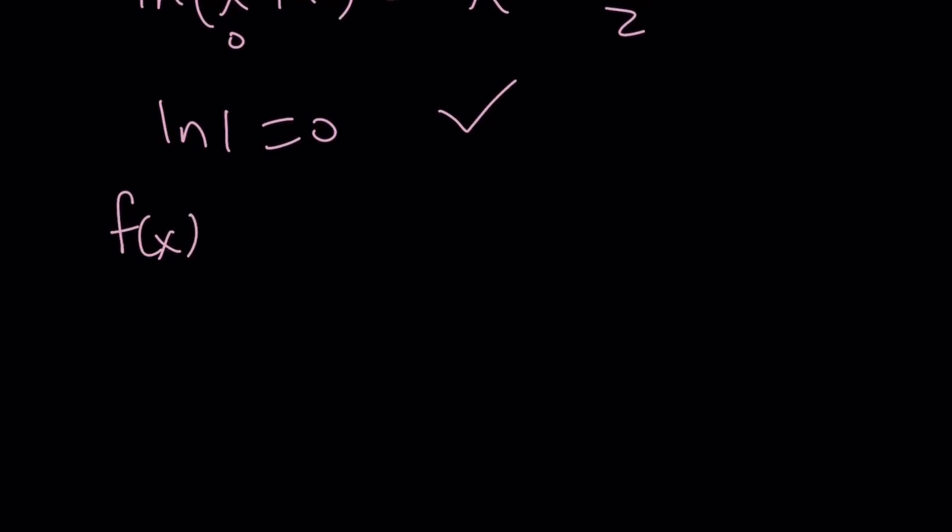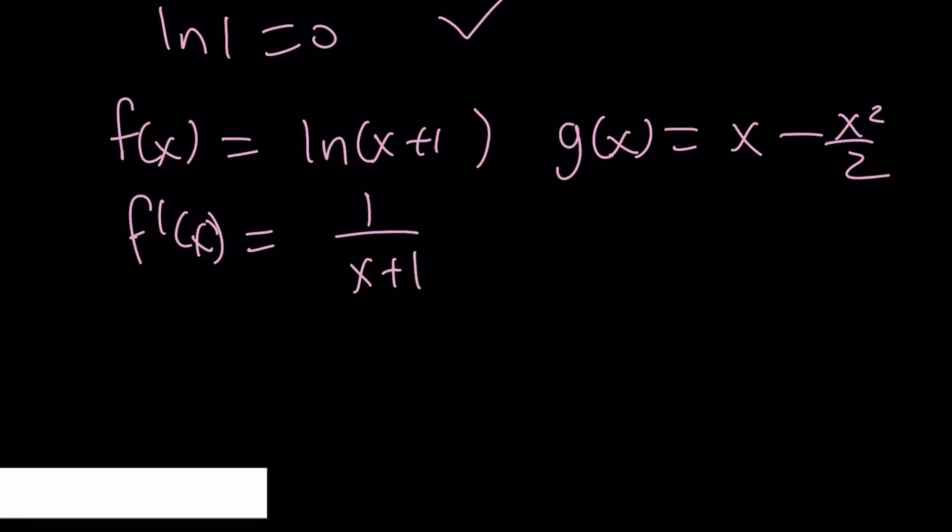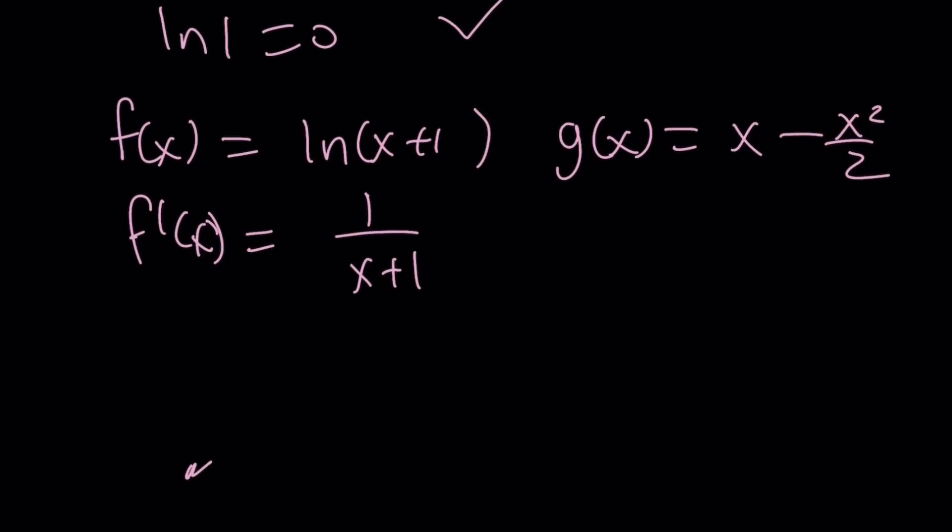So let's do a little bit of calculus here. So we have f(x) equals ln(x+1). And suppose g(x) is defined as x minus x² over 2. I'm going to differentiate f just once, and remember, we already know this. It's 1 over (x+1), right?